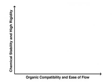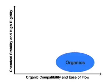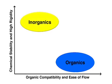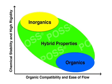Components are typically added to a formulation to improve flow properties or product rigidity. Organic flow modifiers are highly compatible with polymers but have low chemical stability and tend to plasticize the final product. Inorganics are stable and can strengthen the material but are difficult to disperse and process. POSS provides a melding of both inorganic and organic properties into a single molecule.